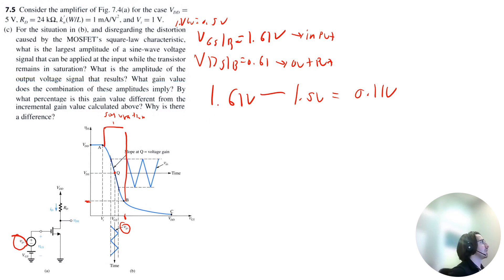So when it asks, what is the amplitude of the output voltage? Now it's asking what gain value does a combination of these amplitudes imply? We can calculate the current in this region to be 0.5 times KN times VGS minus VT squared. So that would be 0.5 times 1 milliamp per volt squared multiplied by 1.39 volts minus 1 volt squared. And that's equal to 0.076 milliamps.